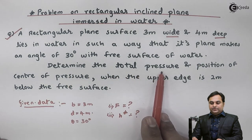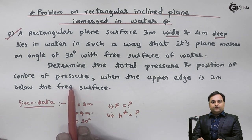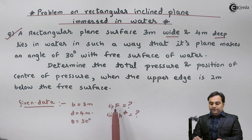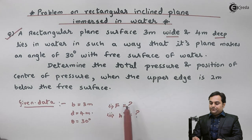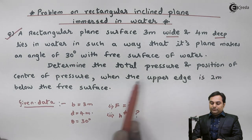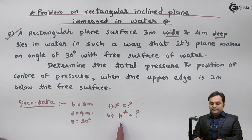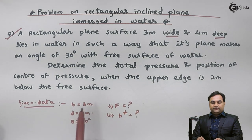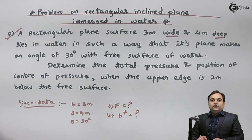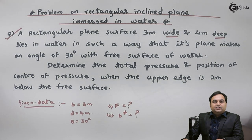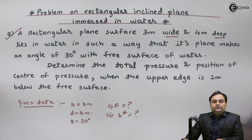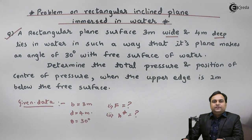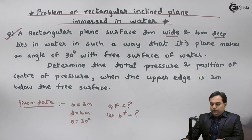We need to determine the total pressure and position of center of pressure. Total pressure means hydrostatic force F, and position of center of pressure is h star. When the upper edge is 2 meter below the free surface. So we have to calculate hydrostatic force and position of center of pressure. Let us start with the solution.